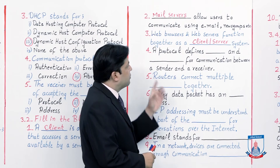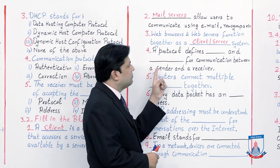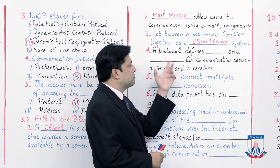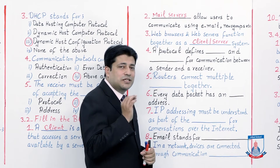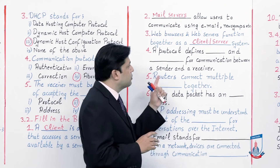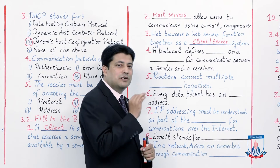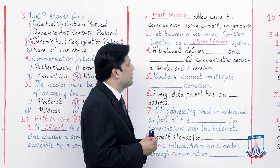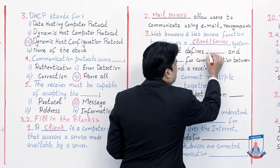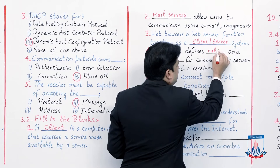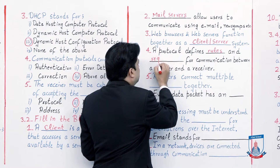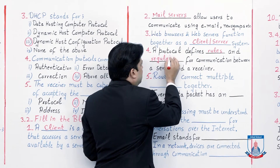Number 4: A protocol defines dash and dash for communication between a sender and a receiver. If you remember the lecture, protocol was defined simply as rules and regulations. So the answer is 'rules and regulations.'